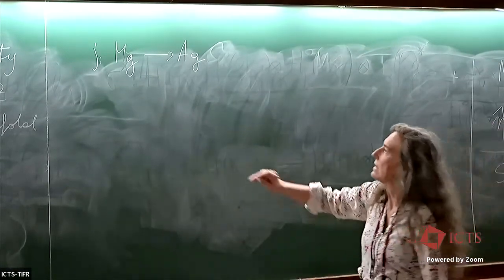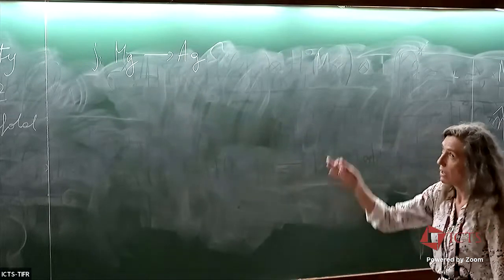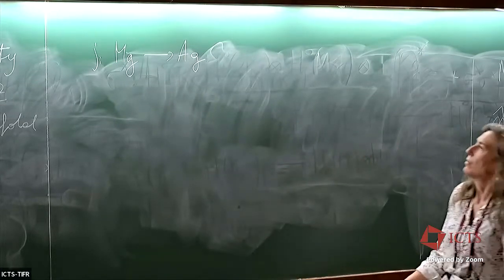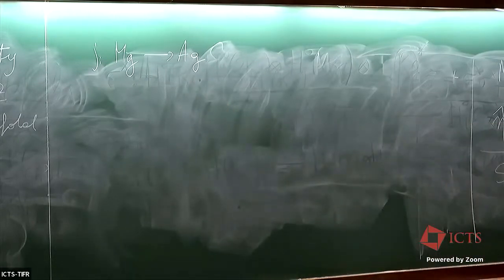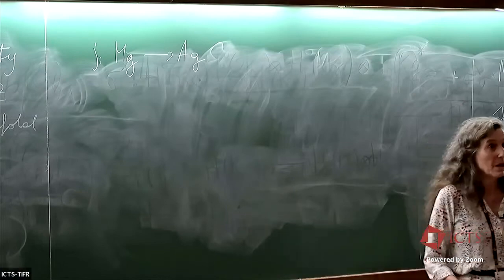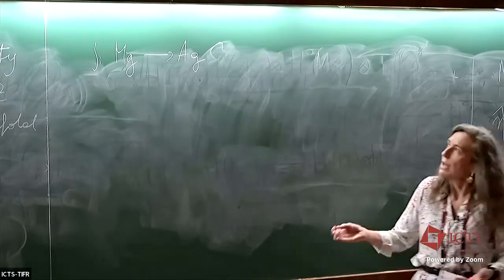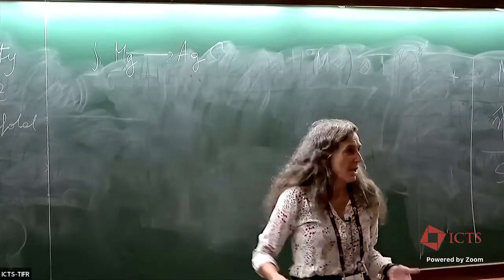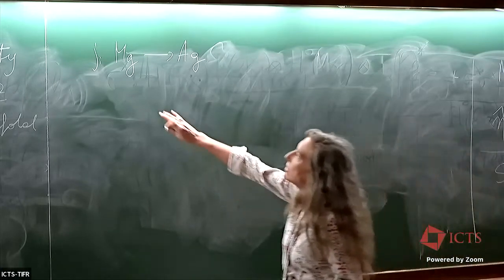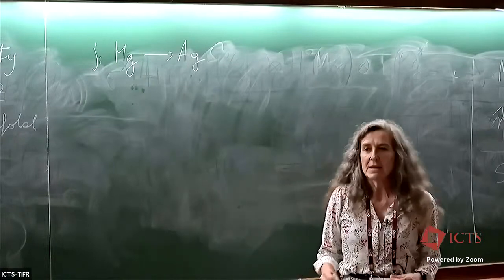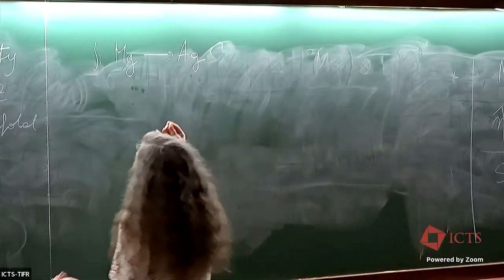We have already seen that A_g has many totally geodesic submanifolds because it is the quotient of H_g, which is a Hermitian symmetric domain. But we expect that they don't lie in the image of the Torelli map. This expectation is a conjecture by Coleman and Oort.